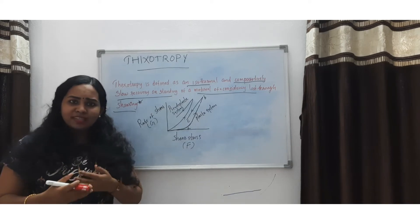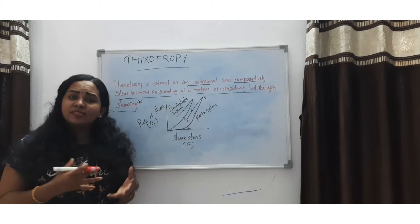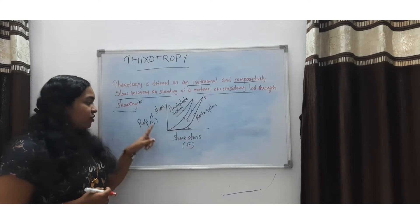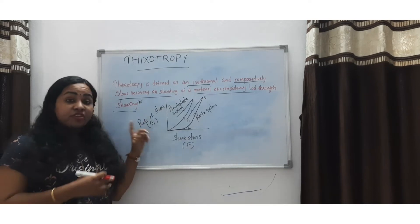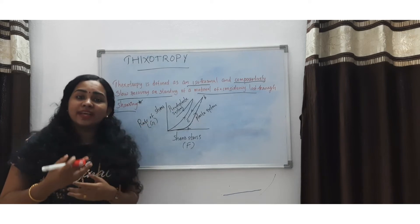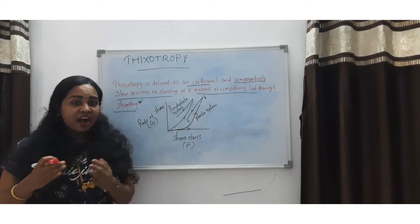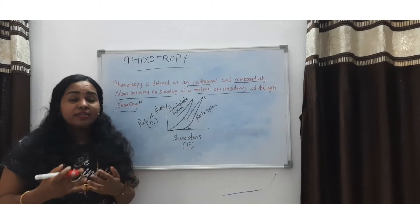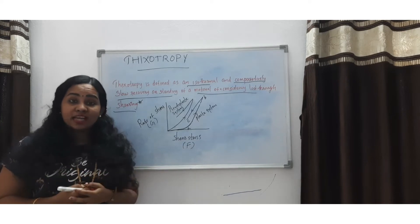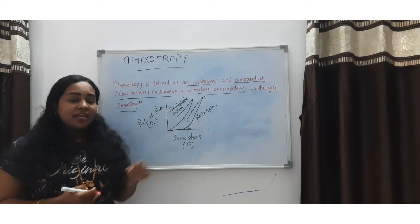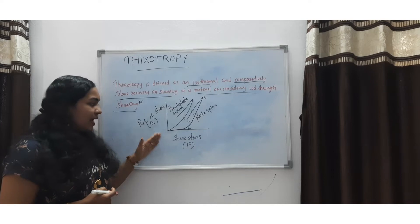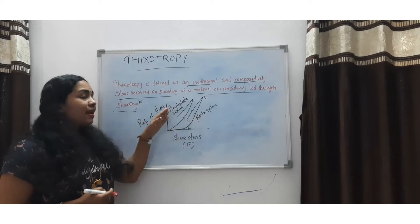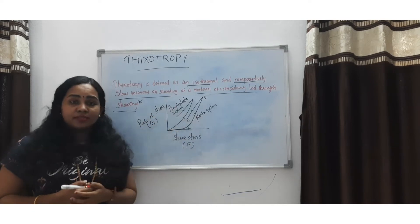A rheogram is a graph expressing the shear stress–shear rate relationship. It is also called a consistency curve. Here you can see a consistency curve or rheogram for both plastic and pseudo-plastic systems.